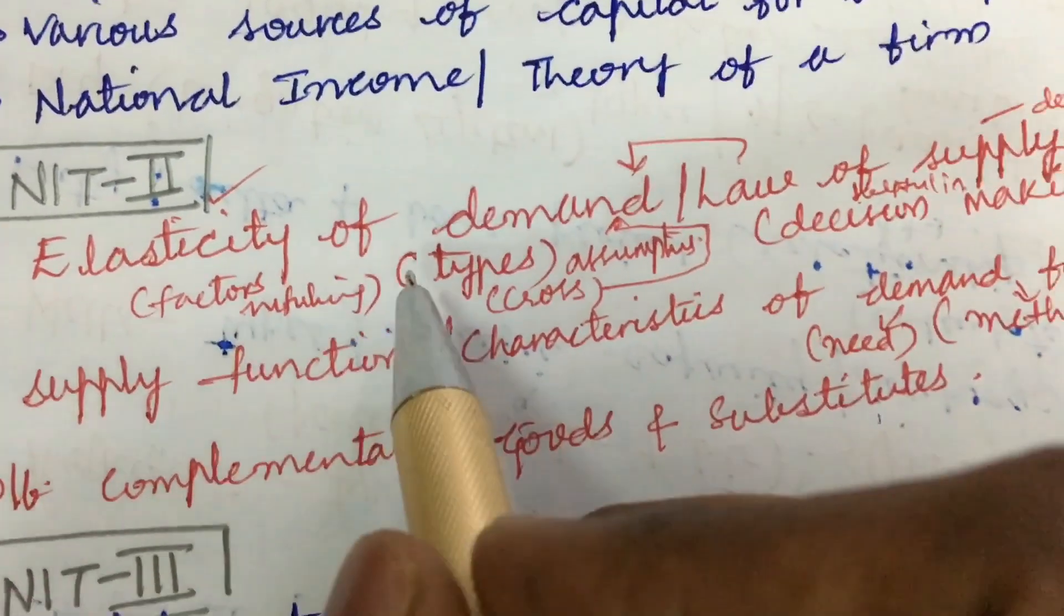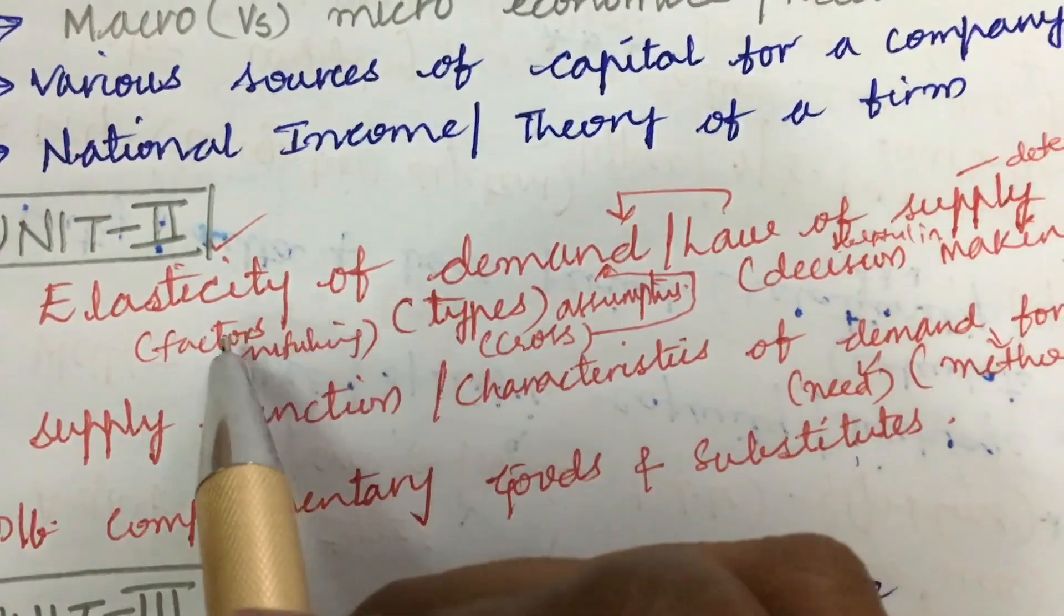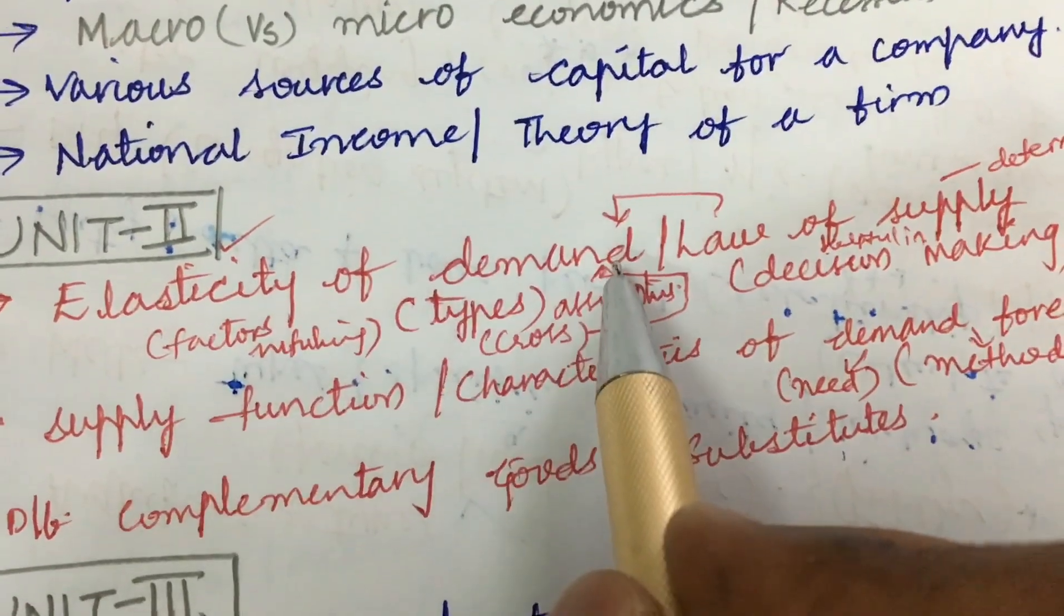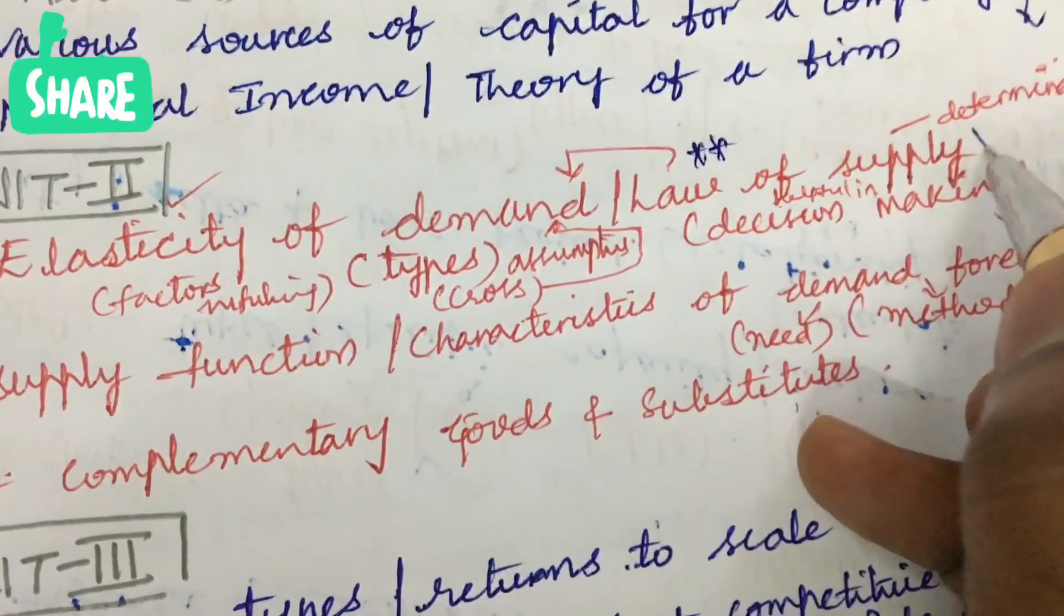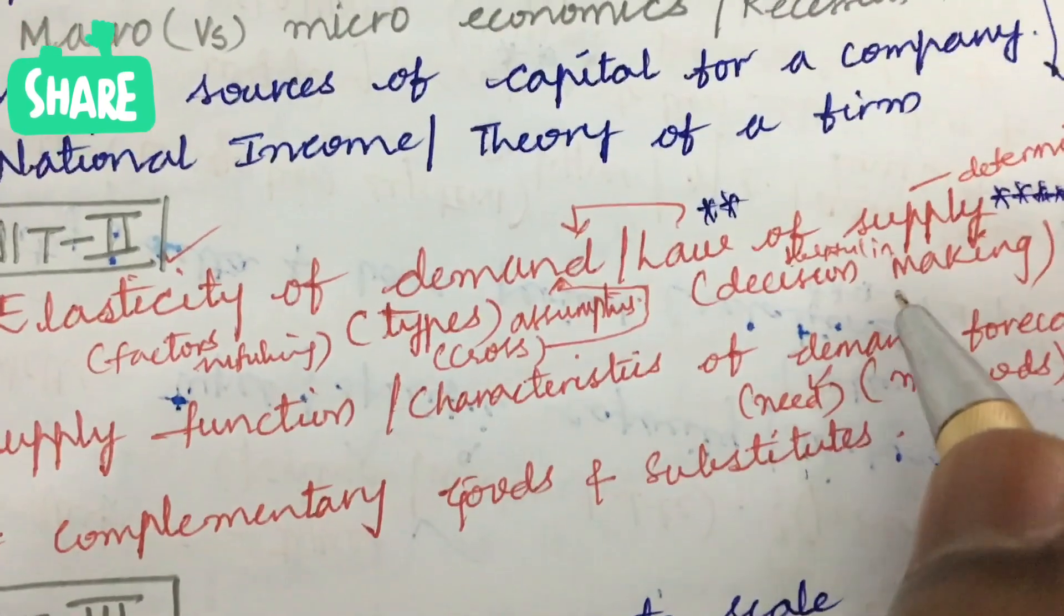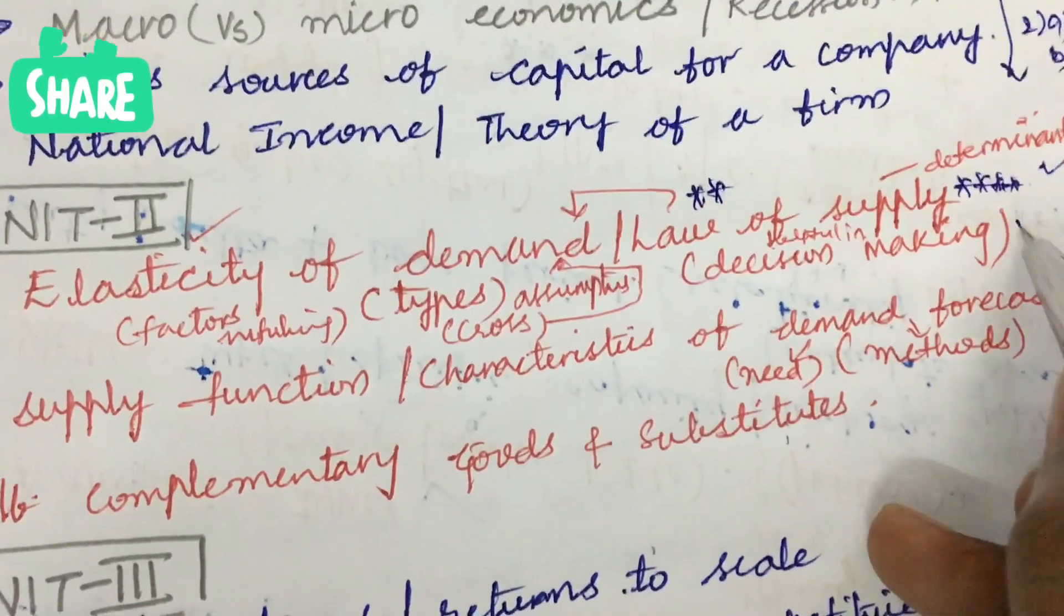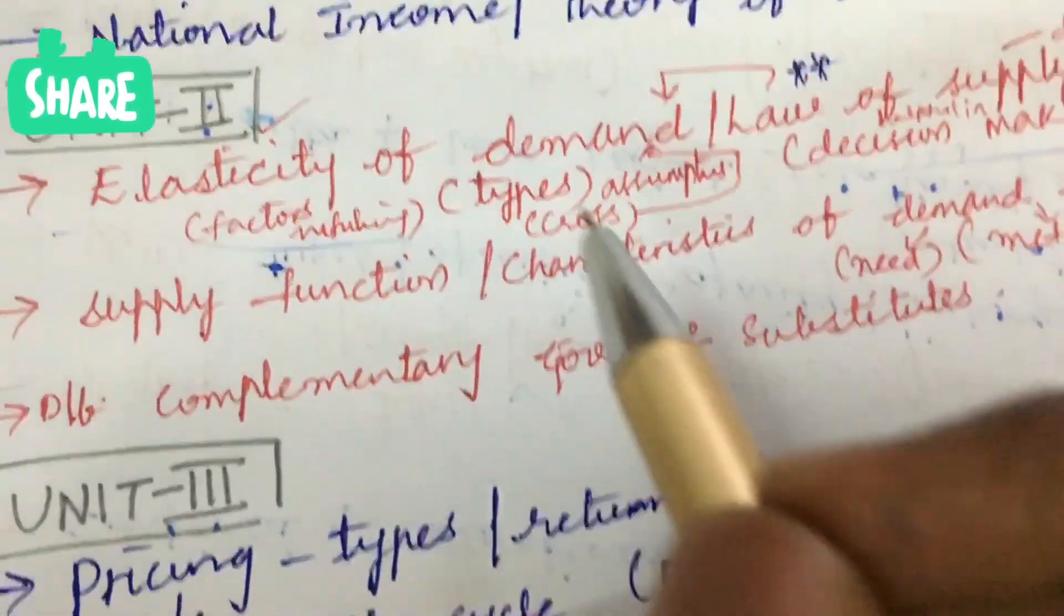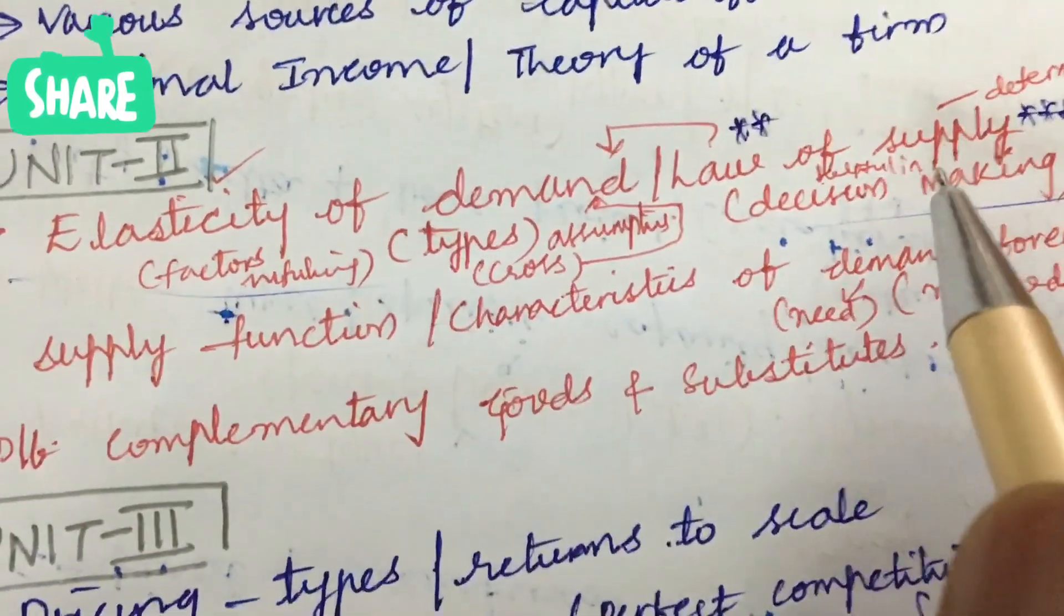Unit 2 is all about elasticity of demand as well as the factors influencing and types of elasticity, assumptions, and cross-elasticity of demand. The laws of demand is very important, and laws of supply is a sure-shot question for this time. The usefulness of the laws of supply in decision-making as well as the determinants—from this we will be getting 3A as well as 3B related to only this concept, dear students. Make sure to work out every term related to demand and supply without skipping any part.